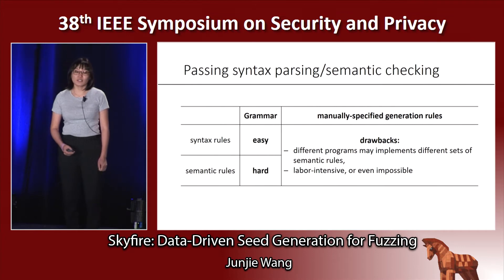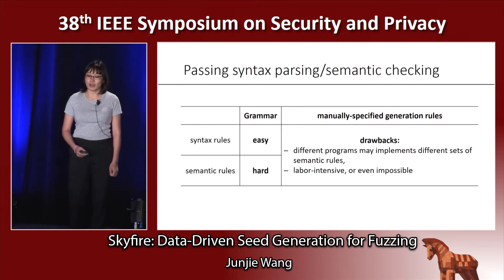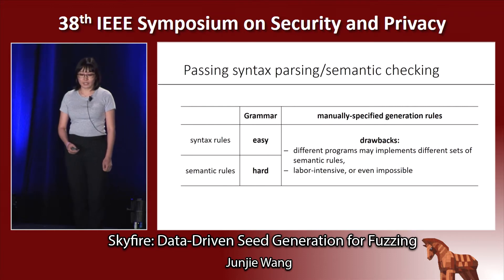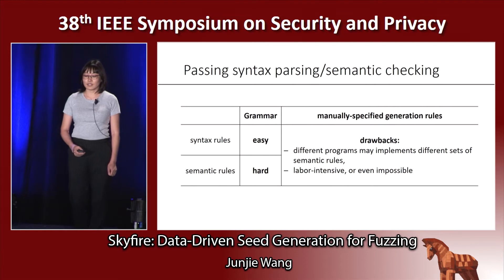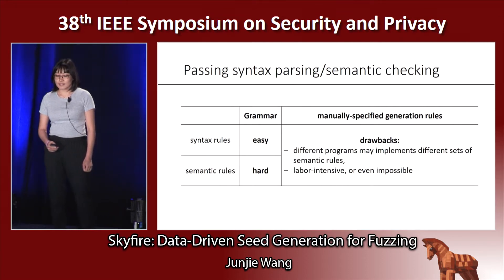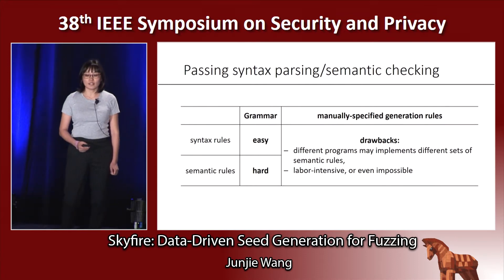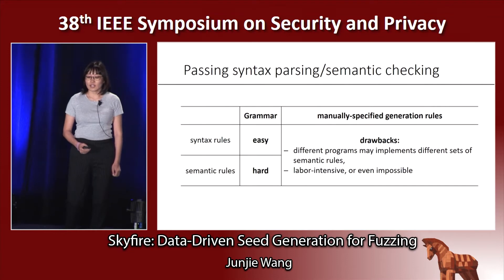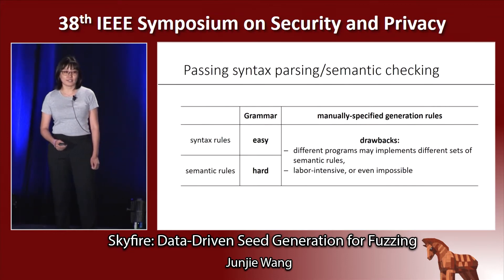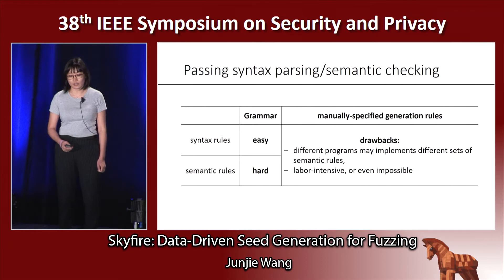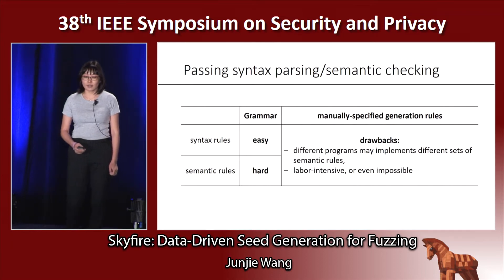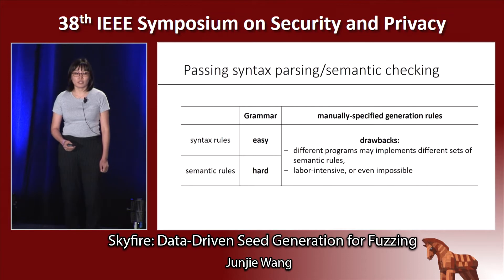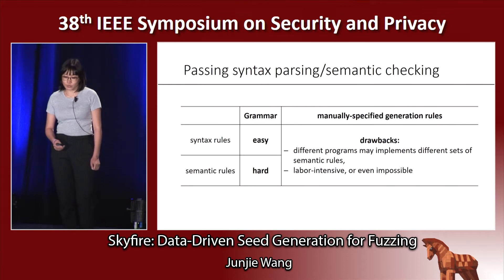Syntax rules can be easily expressed by grammar. However, grammar normally cannot express the semantic rules. So some fuzzers use manually specified generation rules to express both syntax rules and semantic rules. However, there are two drawbacks in this way. First, different programs may implement different sets of semantic rules, and it is labor-intensive or even impossible to list all semantic rules manually.